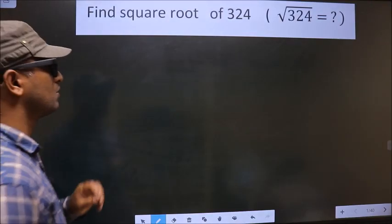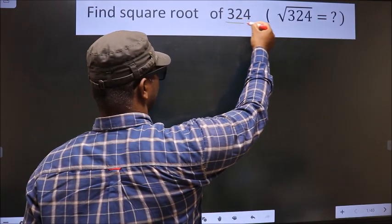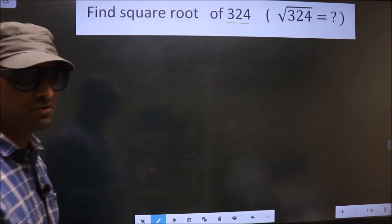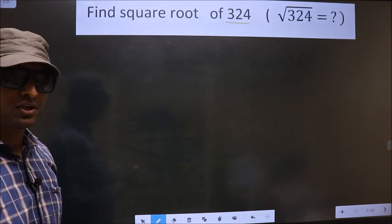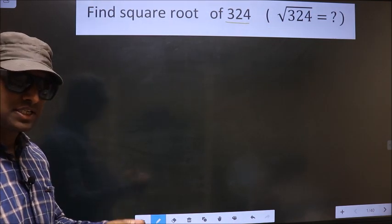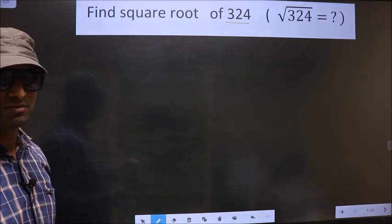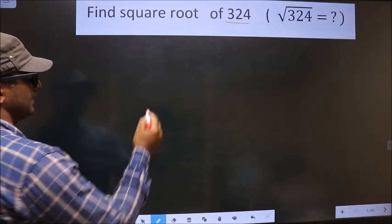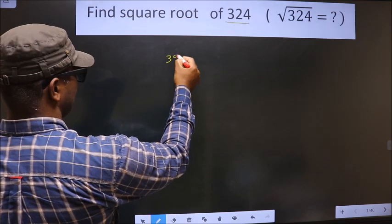Find square root of 324. To find the square root by long division method, first we have to frame it in this way, that is C, 324.